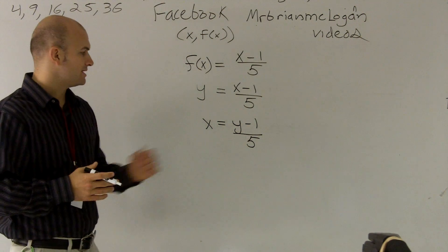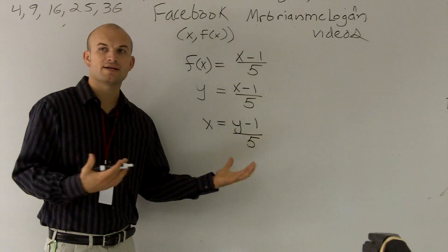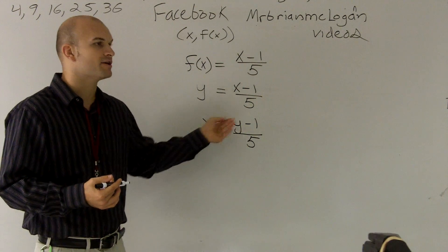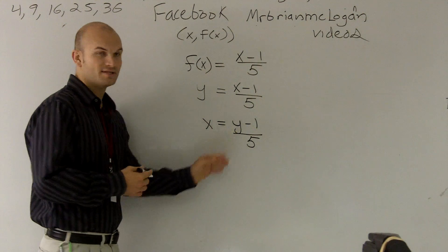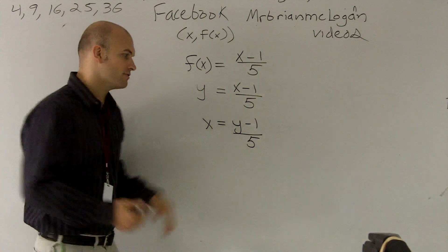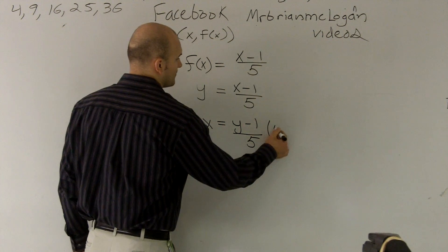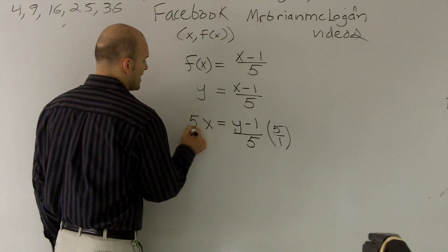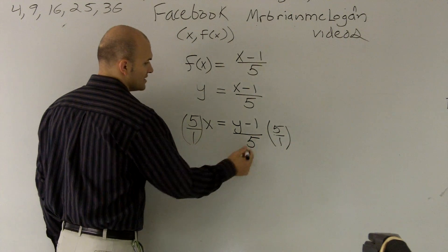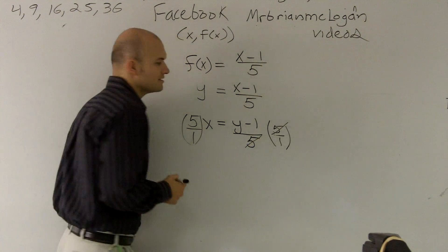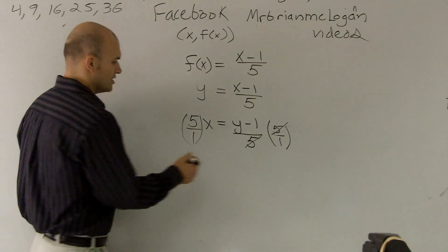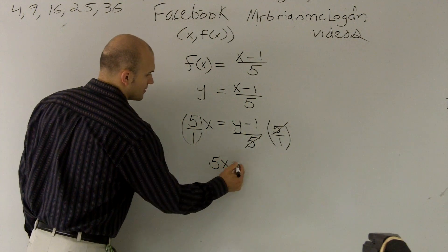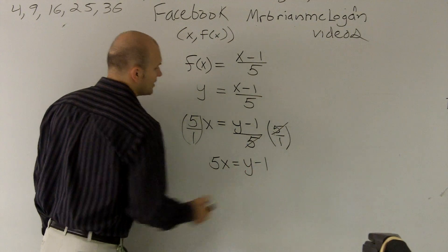The next step is we still need to find the value of our function, so now I'm going to solve for y. The first thing I need to do is get rid of that fraction, so I'm going to multiply by 5 over 1. The reason I multiply by 5 over 1 is because those two 5s cancel out to be 1. So I'm left with 5x equals y minus 1.